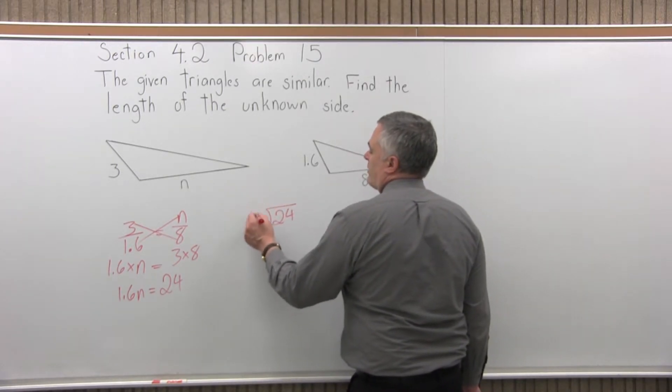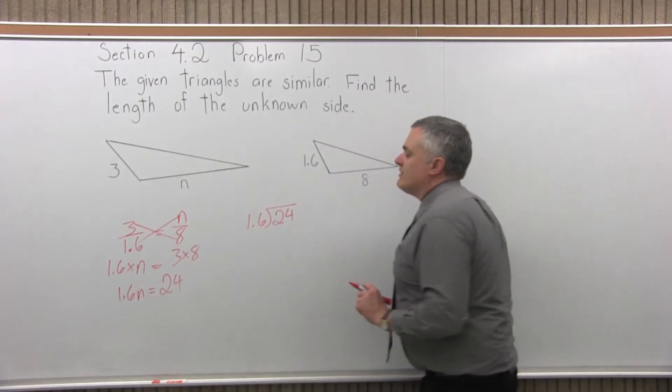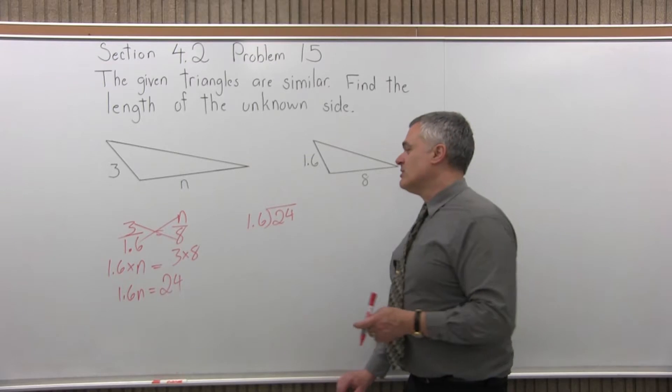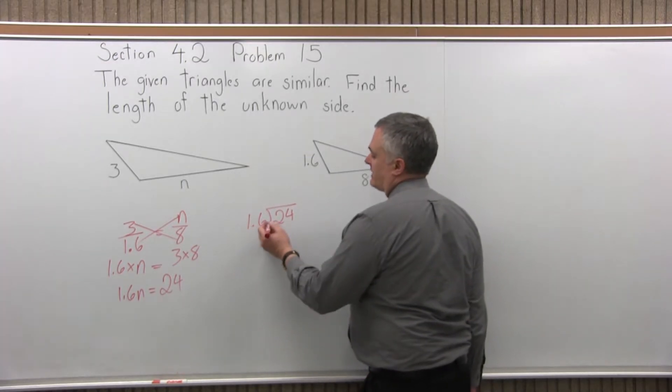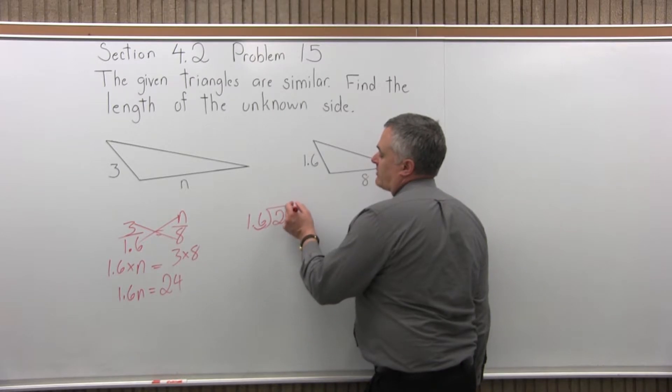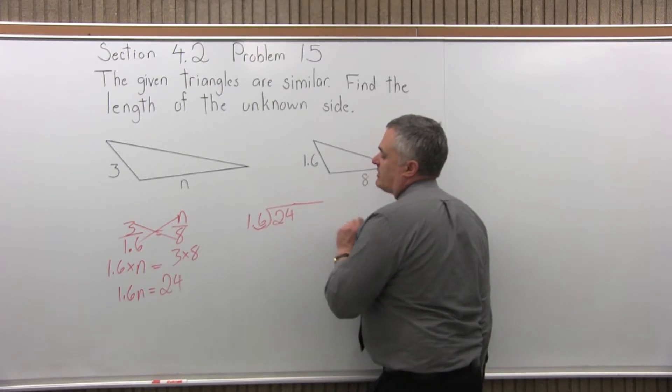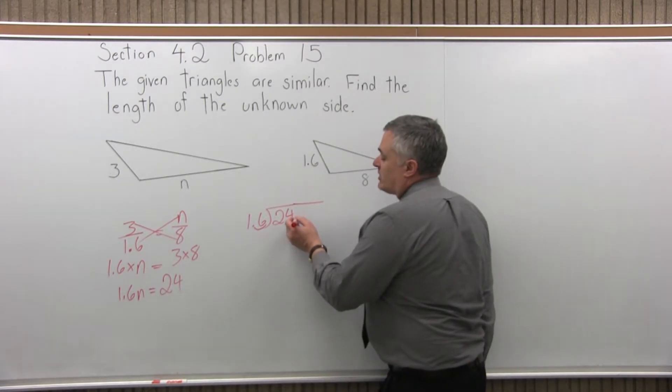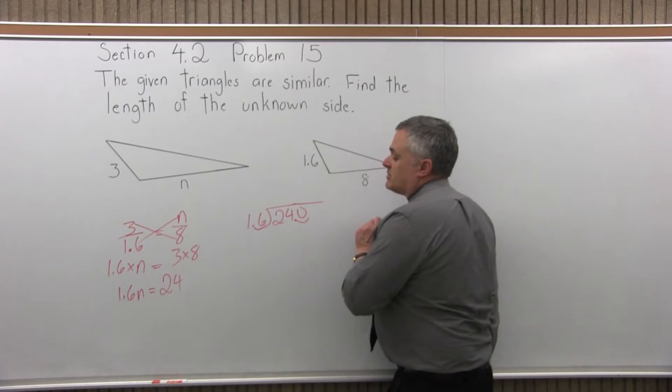So 24 divided by 1.6. Well, when you have a decimal number out in front of the division symbol, what you have to do is move it as far as you have to until it gets to the right end. So we're going to move it one spot. So you have to move it the same number of spots for the number under the division symbol. There's no decimal written in 24 but you're going to assume that it's at the end. So if you move it one spot it becomes 240.